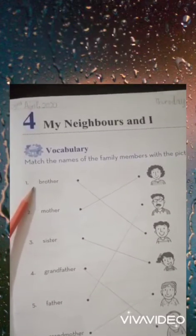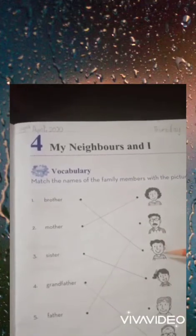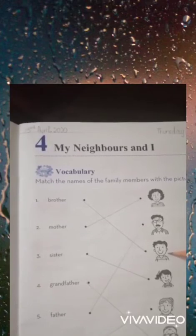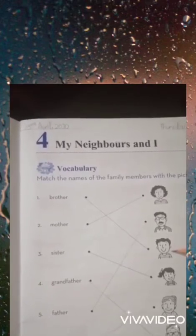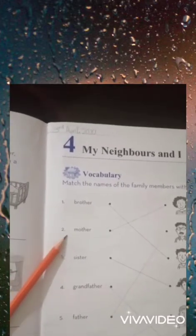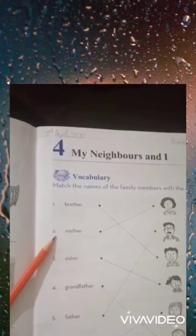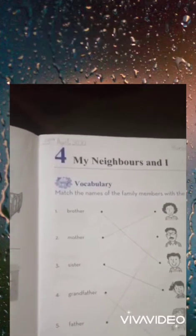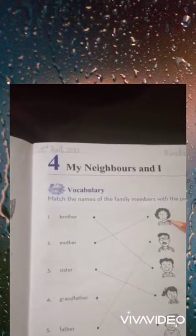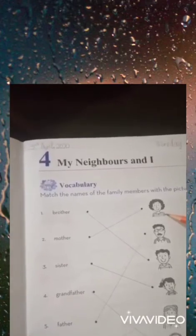The first word is 'brother.' We will look in the pictures for the picture of a brother. Yes, the third picture — this is the picture of a brother, so we will match it with number one. Now the second word is 'mother.' We will look in the pictures — yes, the first picture is the picture of a mother, so we will match it with mother.